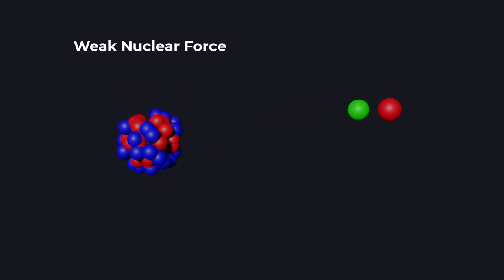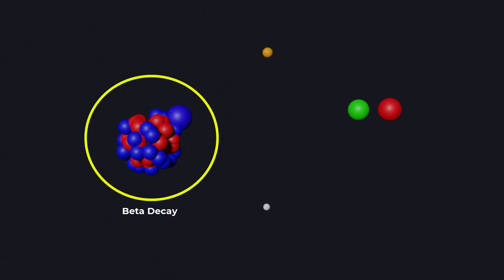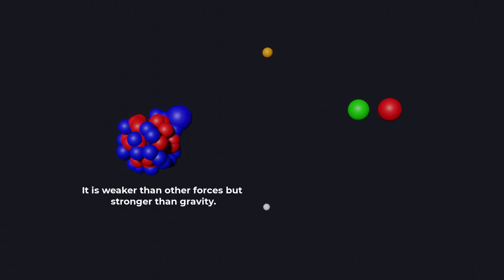The weak nuclear force is responsible for radioactive decay. This force turns a neutron into a proton and a proton into a neutron, such as in beta decay. It is weaker than the strong and electromagnetic forces, but stronger than gravity.